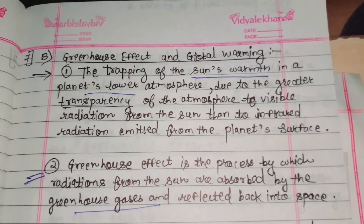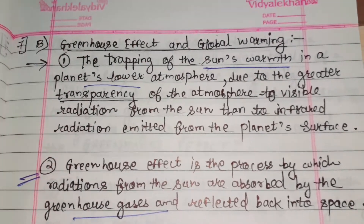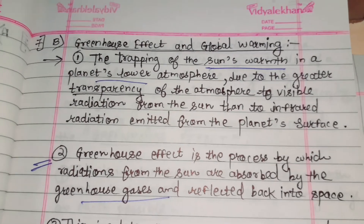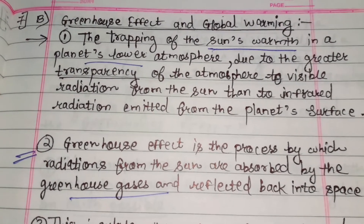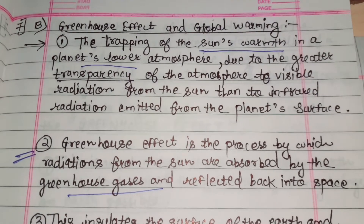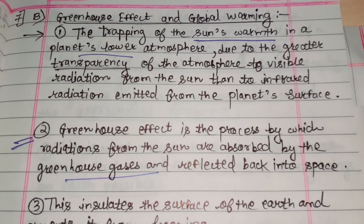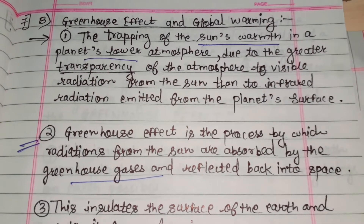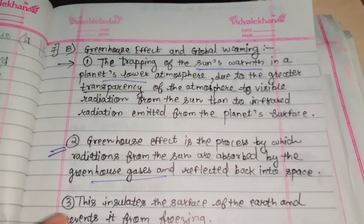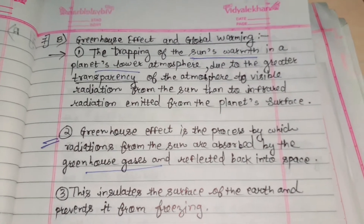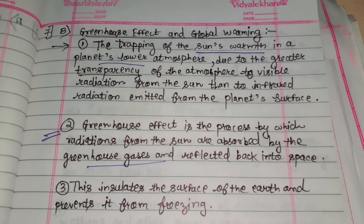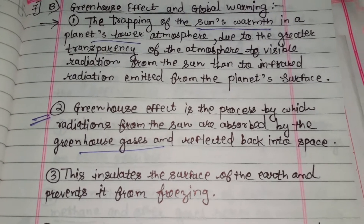Greenhouse Effect and Global Warming. The trapping of the sun's warmth in a planet's lower atmosphere due to the greater transparency of the atmosphere to visible radiation from the sun than to infrared radiation emitted from the planet's surface. Greenhouse effect is the process by which radiations from the sun are absorbed by the greenhouse gases and reflected back into space.